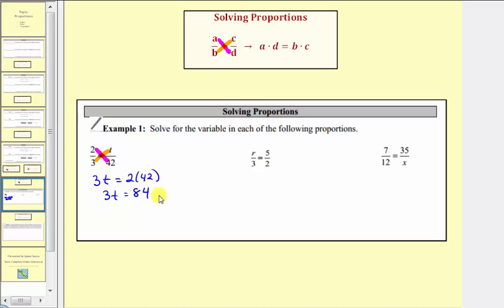So we have three t equals 84. Notice here we have a one step equation. Three t means three times t, so to isolate t and solve the equation, we divide both sides by three. So on the left side, three divided by three simplifies to one. So we have one times t, which equals t. On the right side, we have 84 divided by three, which is equal to 28. This is the solution, so t equals 28 is our solution.